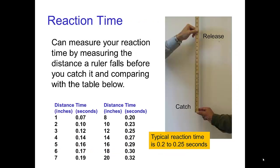If you're curious, you can measure your reaction time. Have a friend release a ruler and measure the distance that the ruler falls before you catch it. Typically, the ruler falls eight to twelve inches before you react and catch it, which this table tells you is a reaction time between a fifth to a quarter seconds.